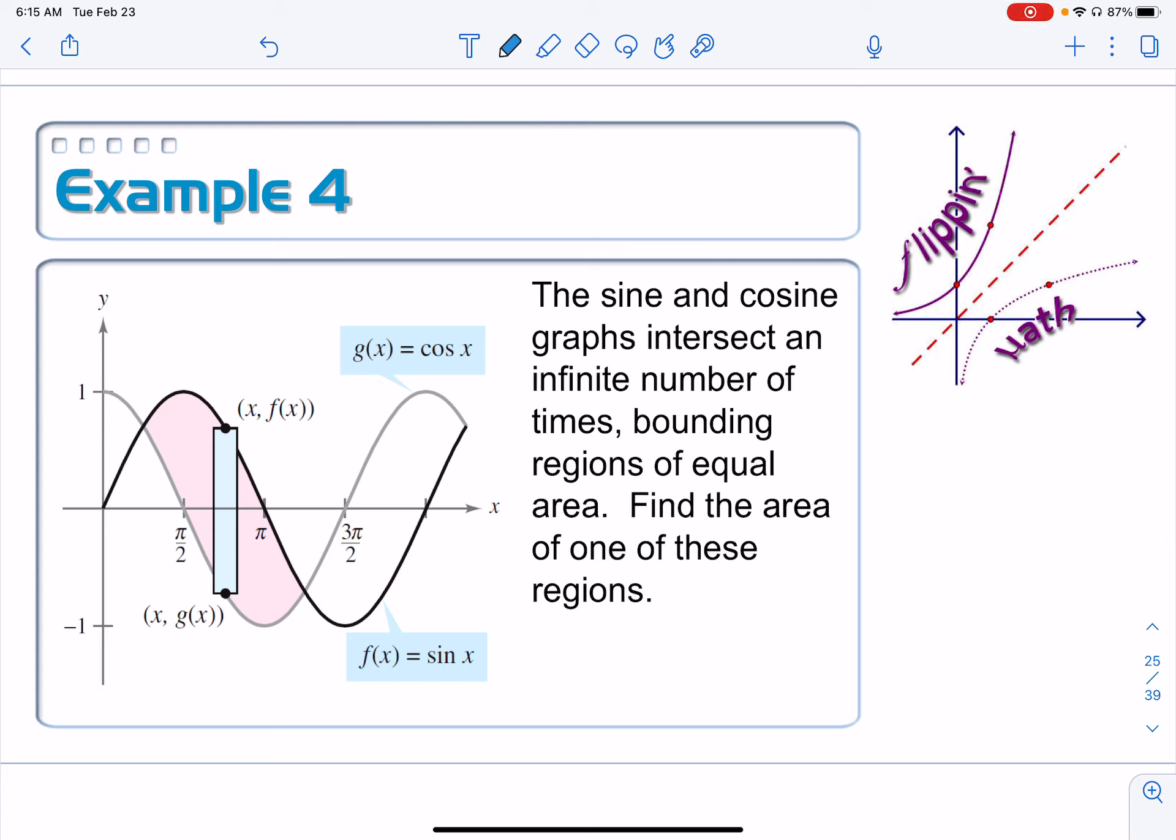The sine and cosine graphs intersect an infinite number of times, bounding regions of equal area. Find the area of one of these regions. So you can see in this little picture here that I can just take this very first region in this first quadrant. Actually, it's not just the first quadrant, it's the first quadrant and the fourth quadrant.